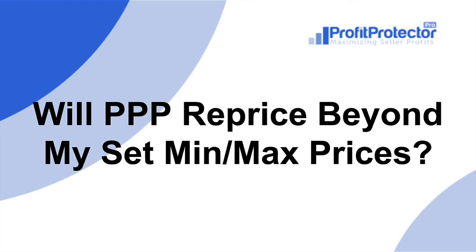The next question: will PPP reprice beyond my set minimum and maximum prices? The answer is no — it is programmed not to do that. You set a minimum price and a maximum price and it will stay between those two. If it ever feels the need to go below your minimum or above your maximum, it won't. If you check your repricing history, it will say that it wants to go below your minimum but because it can't, it's just sitting at your minimum price. You'll see those calculation decisions in the repricing history for your items. You're also welcome to change your minimum and maximum prices anytime within your inventory and it will just continue to reprice with the new parameters.